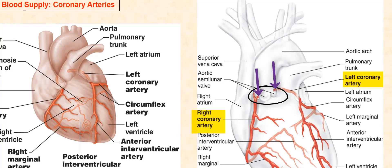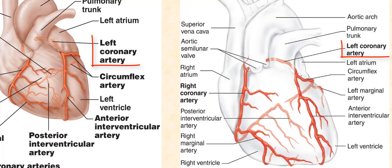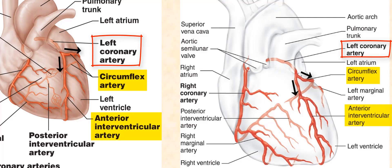These openings allow blood from the aorta to enter these arteries and provide oxygenated blood to the wall of the heart. Let us first discuss the left coronary artery. The left coronary artery branches into two major arteries: the circumflex artery and the anterior interventricular artery.